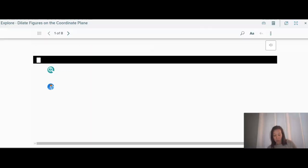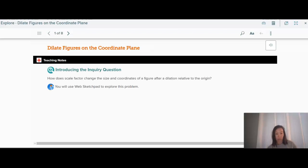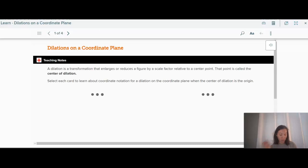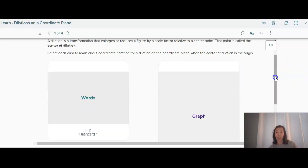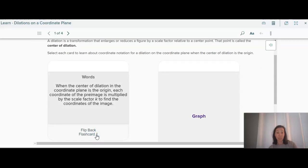If we are going to do this on a coordinate plane, then it's actually pretty simple. Now, this dilation, this transformation, will enlarge or reduce the scale factor, but it's also relative to a certain point called the center of dilation. So this is important to know, is that we do have a center of dilation. When the center of dilation in the coordinate plane is the origin, each coordinate of the pre-image is just multiplied by the scale factor.